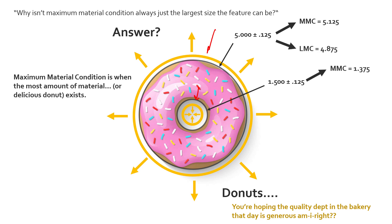For the LMC, it's just the other side of that tolerance. The LMC for the outside diameter is 4.875 — the smallest diameter. For the internal feature, the LMC is 1.625 — the largest diameter — thus reducing how much delicious donut we get.